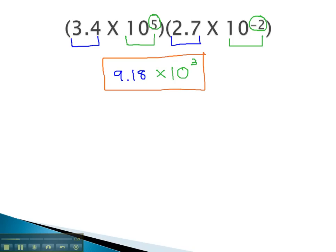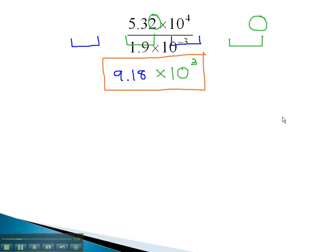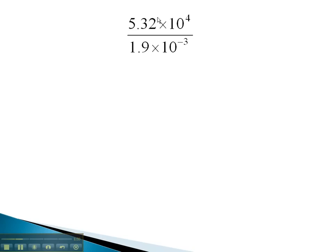Let's try another example, where we either multiply or divide the numbers, and then we use our exponent properties on the tens. In this problem, we see we have 5.32 over 1.9. Dividing those on the calculator gives us 2.8.